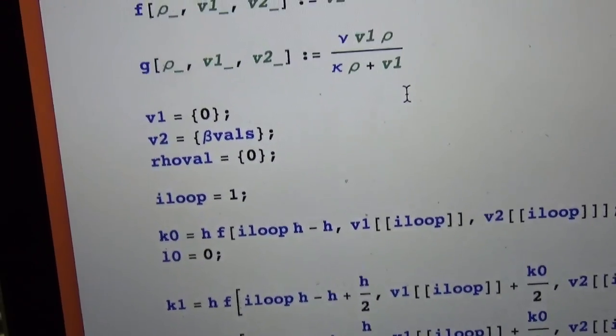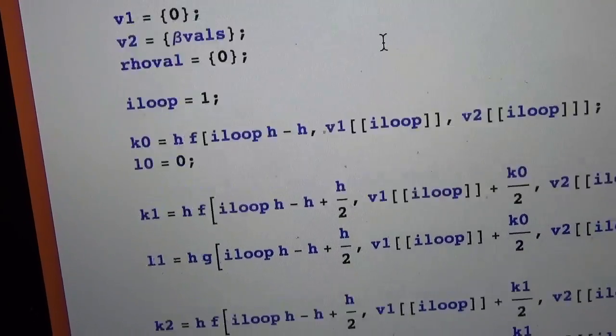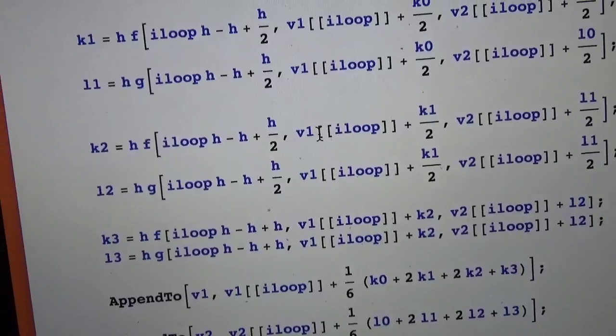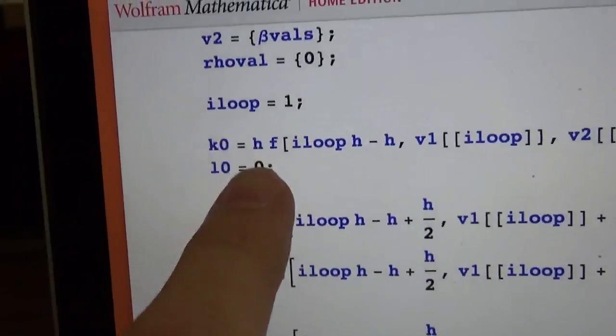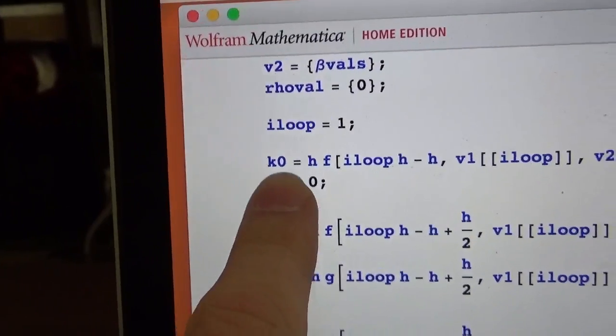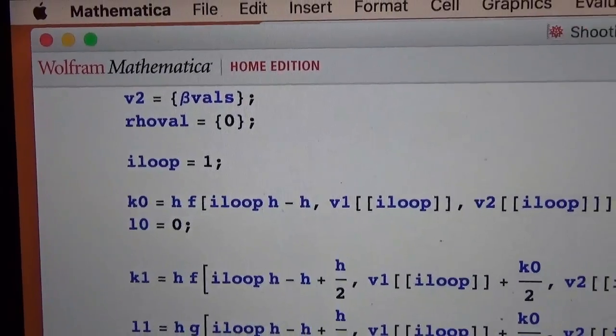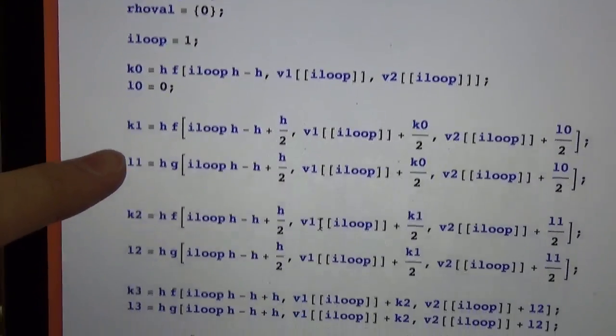I loop, that's just a looping variable that I used. The next thing to do is to define the coefficients, the k0 through 3 and l0 through 3. Recognize here that we're putting l naught or l0 is equal to 0, and that came from our L'Hopital's rule. Then the rest of these are just formulaic.